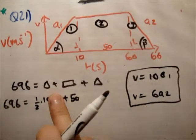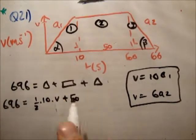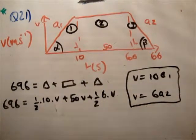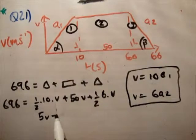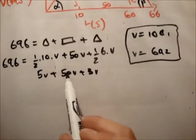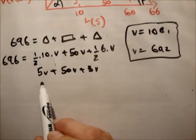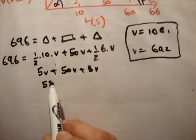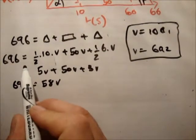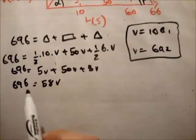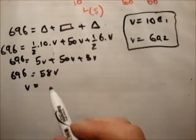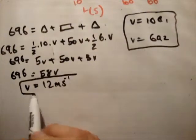50 times V plus a half, 6 times V. So that's 5V plus 50V plus 3V. And that turns out to be 58V. And that's equal to 696. Therefore, V is equal to 696 divided by 58, which is equal to 12 meters per second.